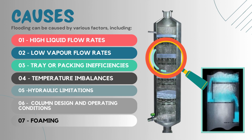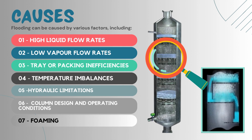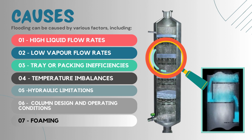The second factor which leads to flooding is low vapor flow rates. If there isn't enough vapor flowing through the column to efficiently carry out the separation process, liquid accumulates and floods the column. This can result from factors such as low feed rates, insufficient heat input for vaporization, or vacuum leaks in vacuum distillation columns.